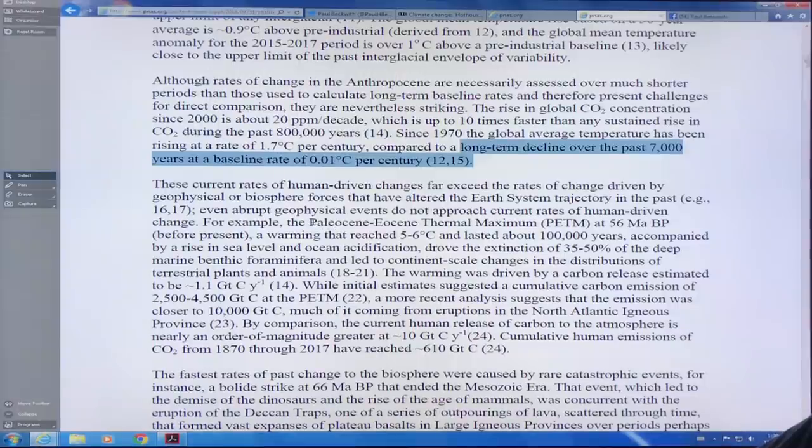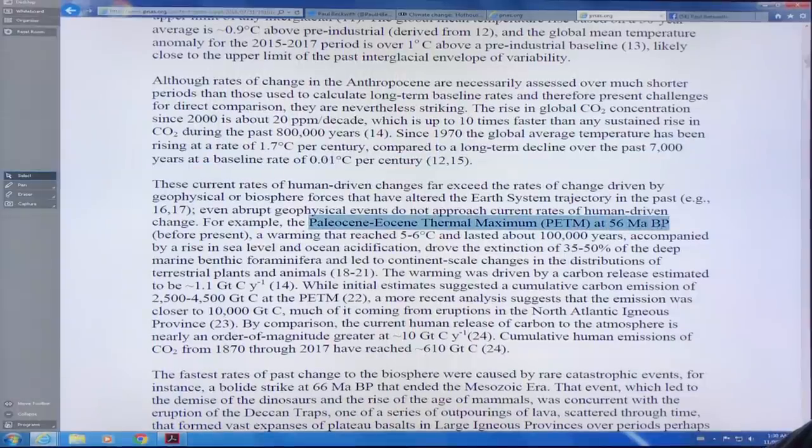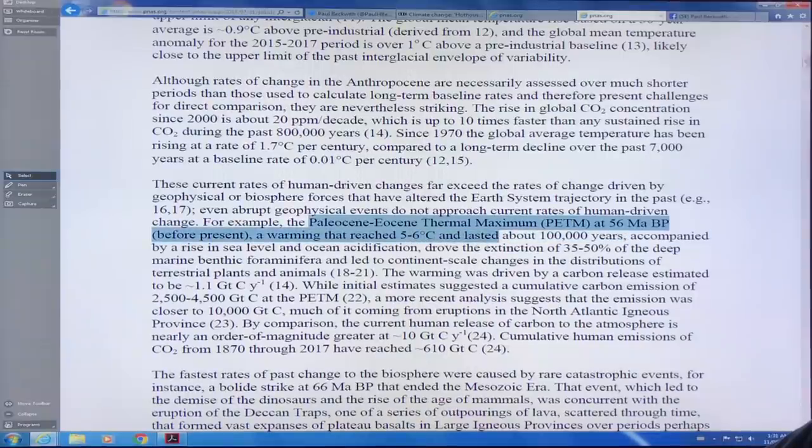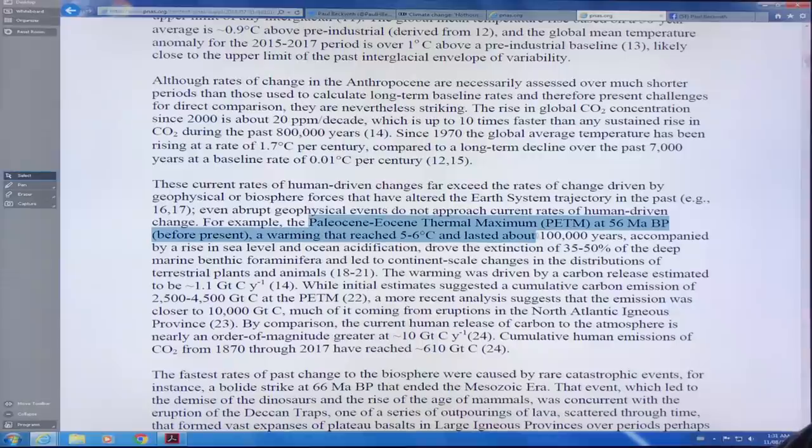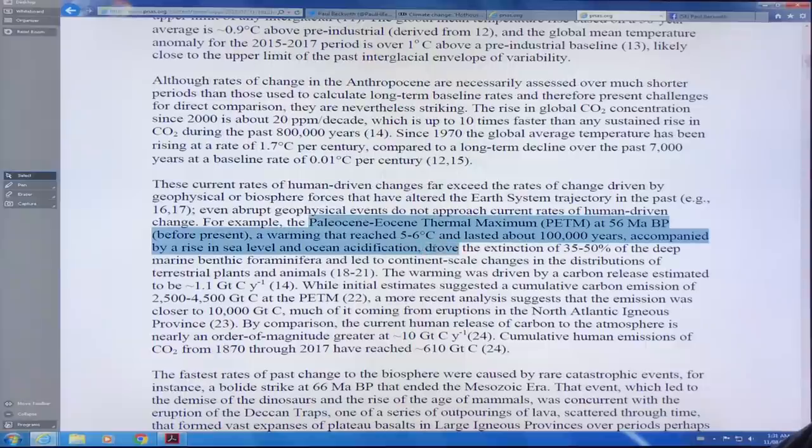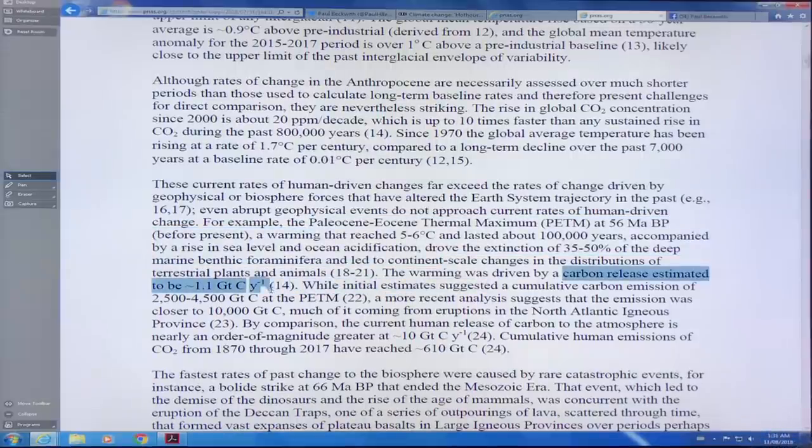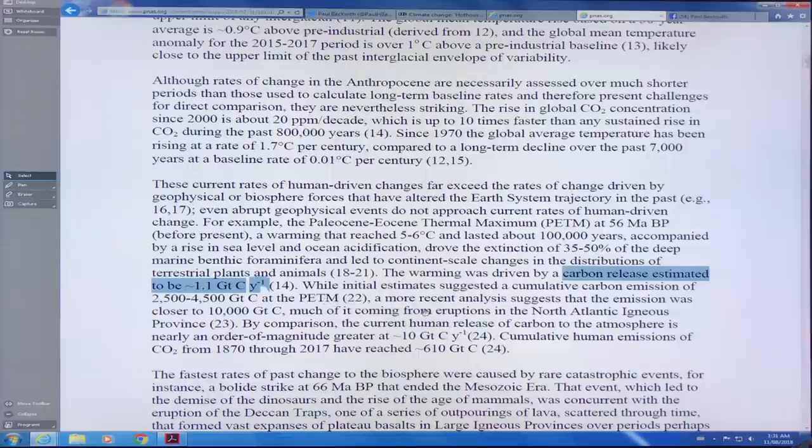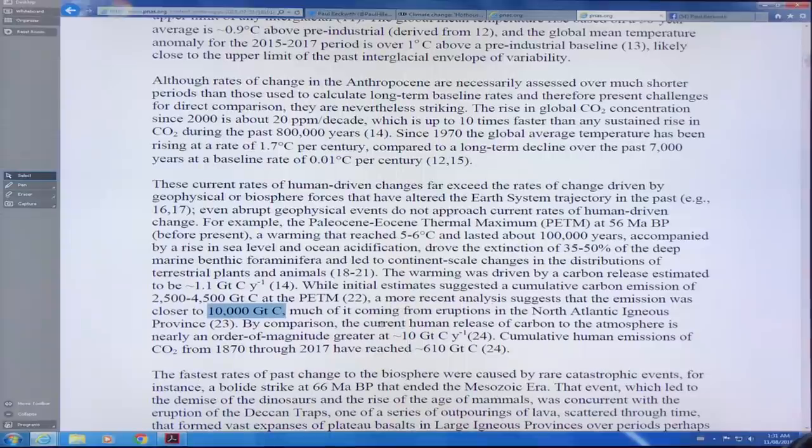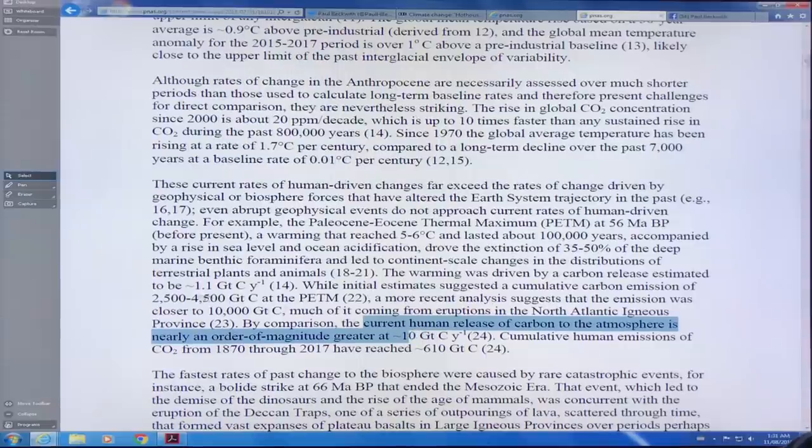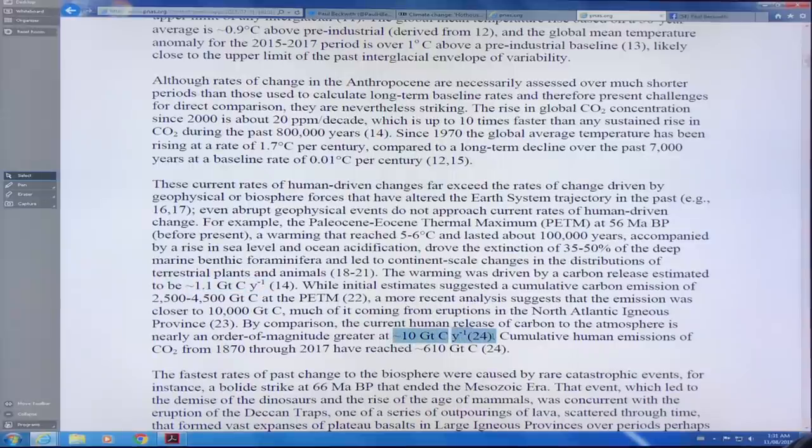The Paleocene-Eocene thermal maximum, very warm period on Earth, 56 million years before present. The warming reached 5 to 6 degrees Celsius above pre-industrial, lasted about 100,000 years. There was sea level rise, ocean acidification, extinction of a lot of things. This warming was driven by a carbon release of about 1.1 gigatons of carbon per year for a total of about 10,000 gigatons of carbon. What we're doing right now is we're putting carbon in the atmosphere at a 10 times faster rate. We're now at 10 gigatons of carbon per year.